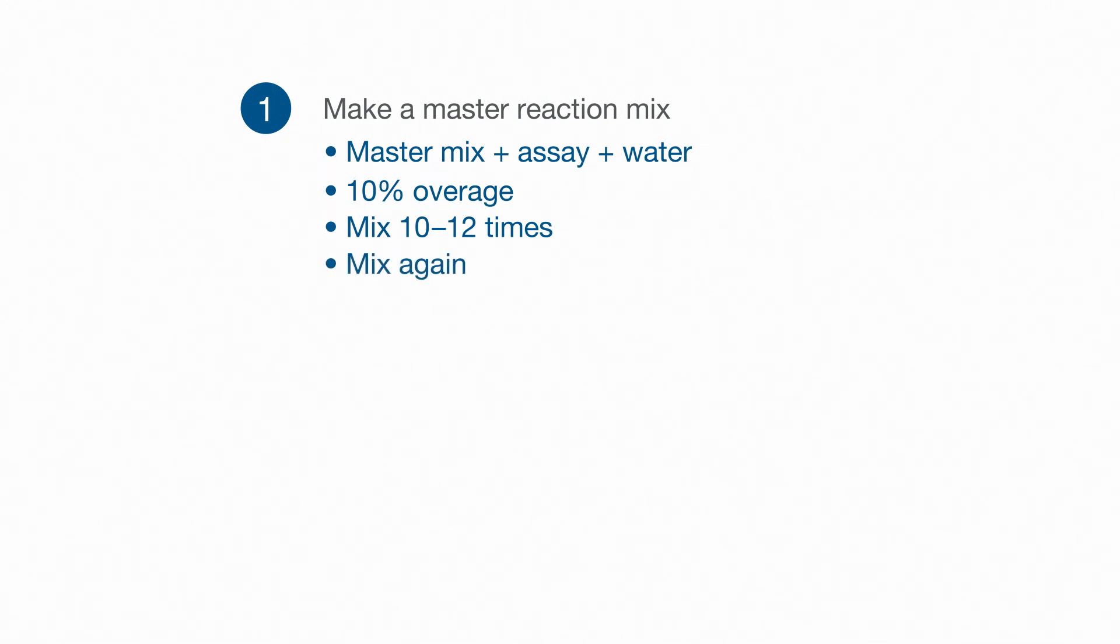Number one, make a master reaction mix that contains the total volume of master mix, assay, and water needed for the total number of reactions. Always include a 10% overage of each reaction mix component to account for pipetting losses. Thoroughly mix the cocktail by pipetting up and down 10 to 12 times. Mix again before use if the cocktail will be sitting around so that the components don't settle out.